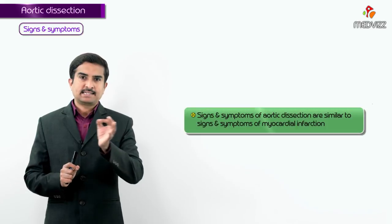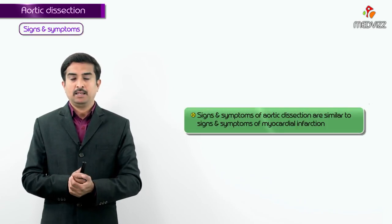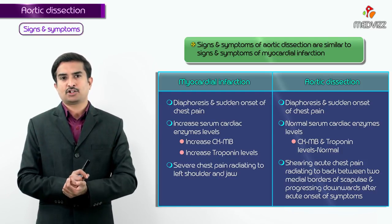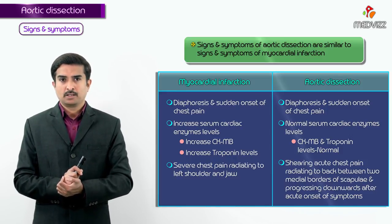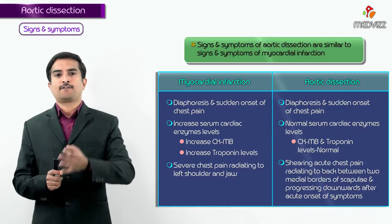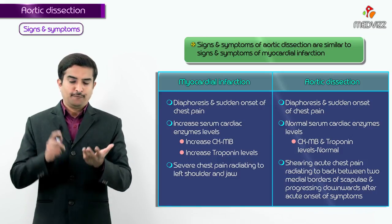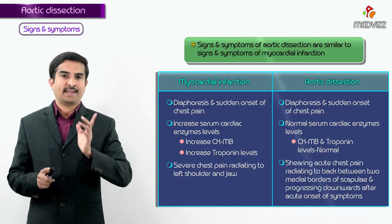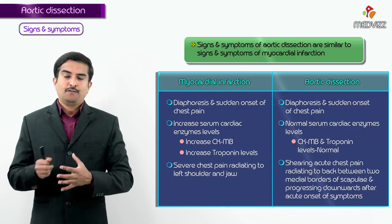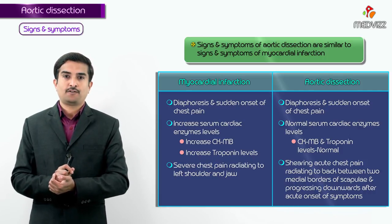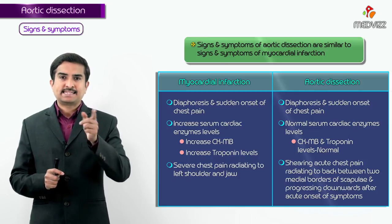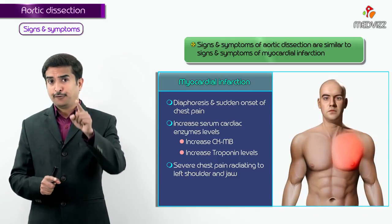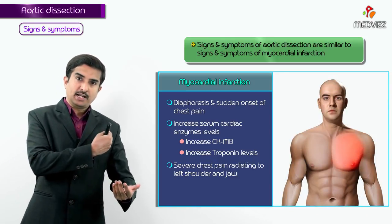The signs and symptoms of aortic dissection mimic myocardial infarction because both present with diaphoresis and sudden onset of severe chest pain. However, in aortic dissection, serum levels of cardiac enzymes — CK-MB and troponin I — will not be elevated, whereas these are elevated in acute myocardial infarction. In aortic dissection there is a severe tearing chest pain.